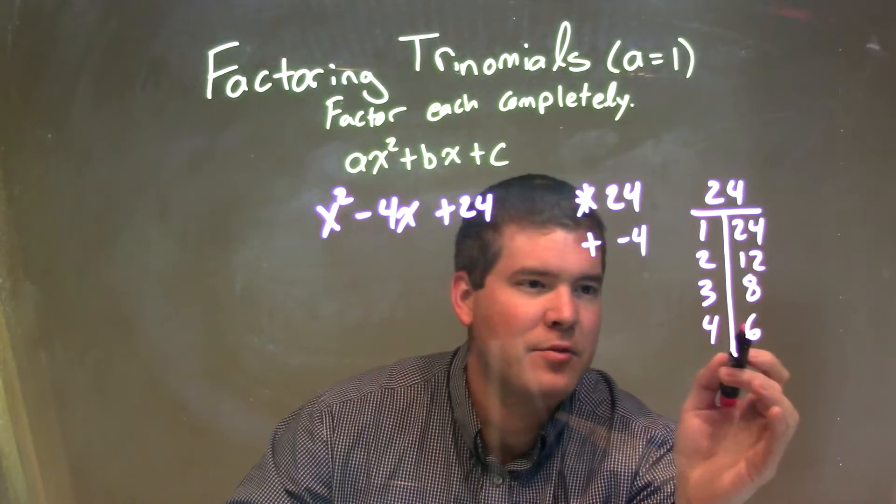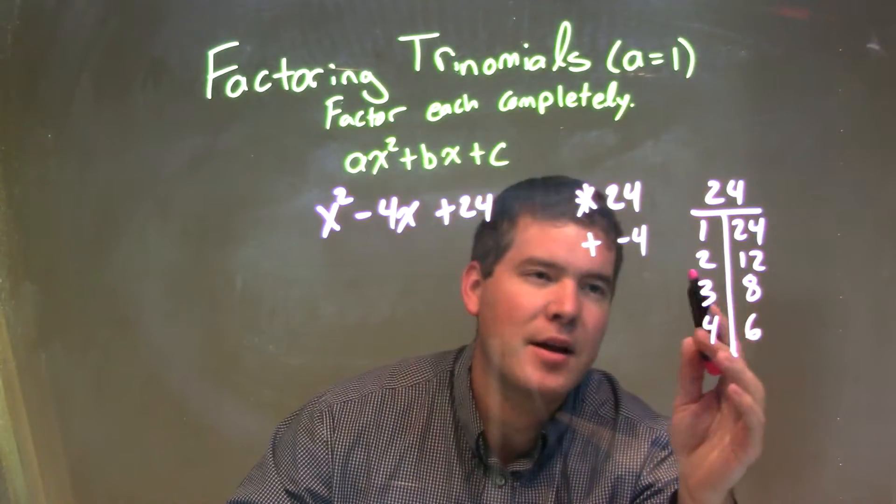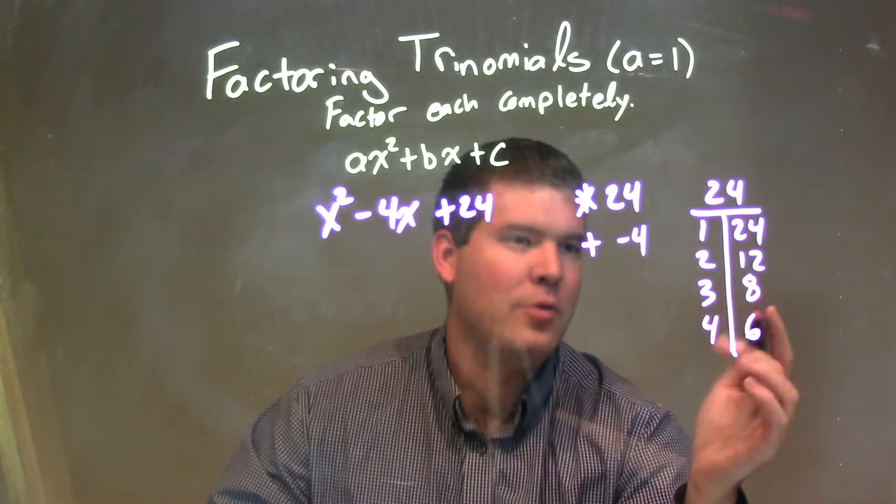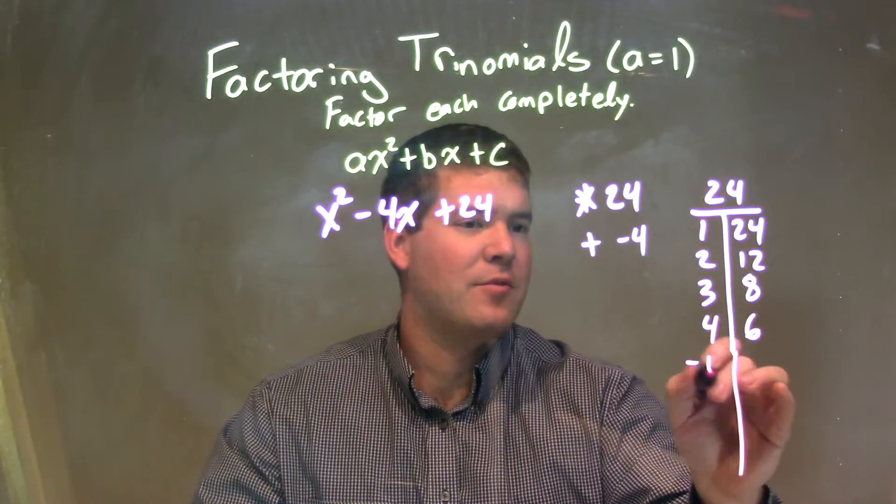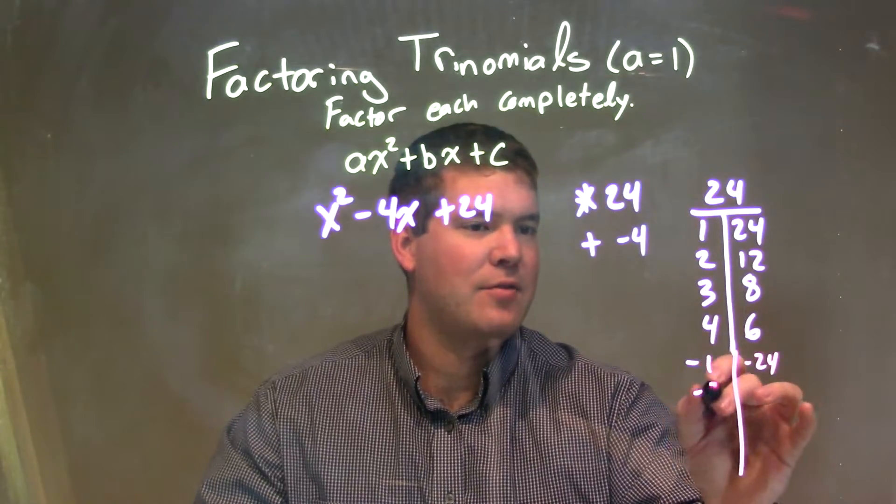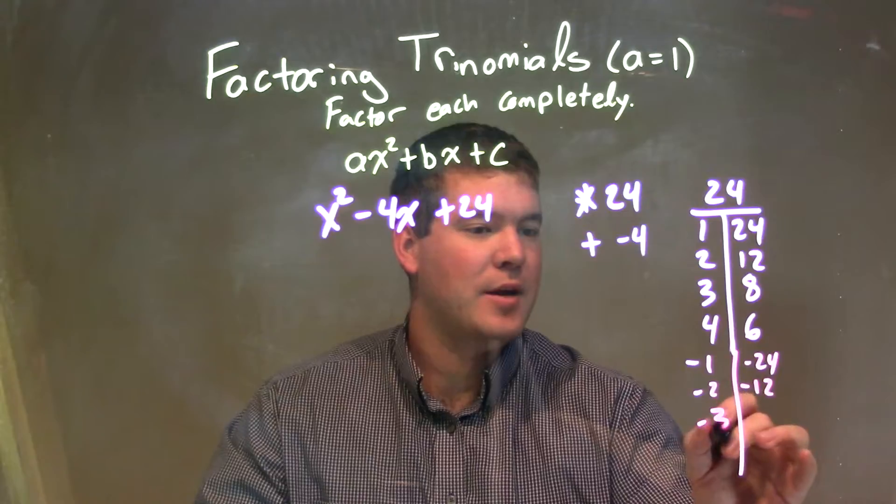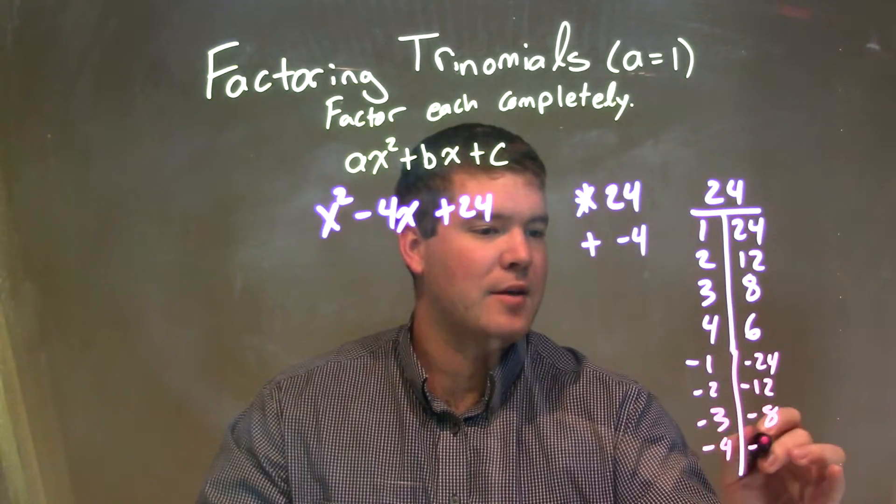And then they can both be negative. It can be negative 4, negative 6, negative 3, negative 8, negative 2, negative 12. And we can write all those. Negative 1, negative 24 technically. Negative 2, negative 12. Negative 3, negative 8. And negative 4, negative 6.